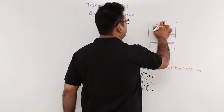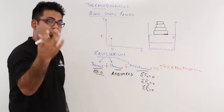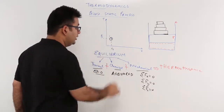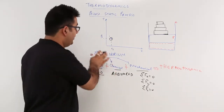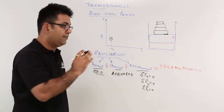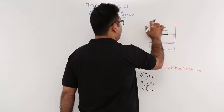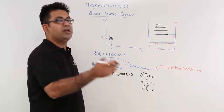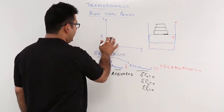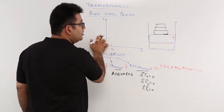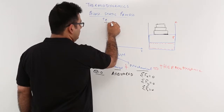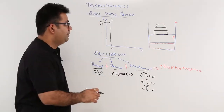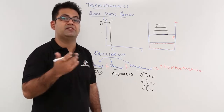Let us assume that at this particular condition, the state of the system is state 1, where the pressure is P1 and the volume is V1. Now I will remove the first weight. When you remove the first weight, the pressure will decrease and the volume will increase. So the pressure reduces a bit and the volume increases a bit.